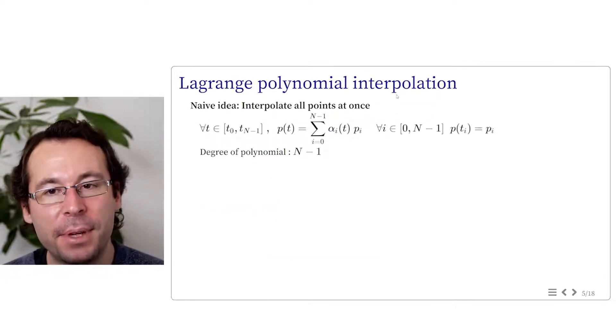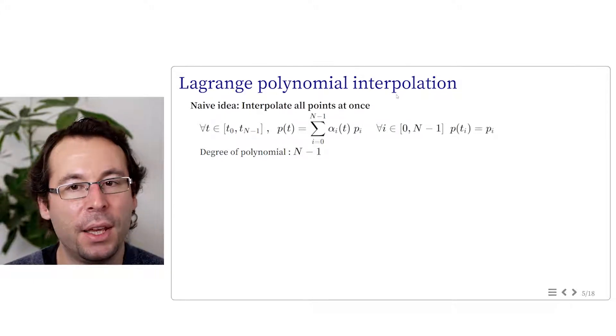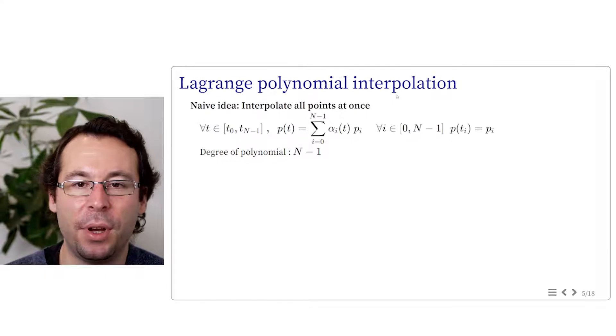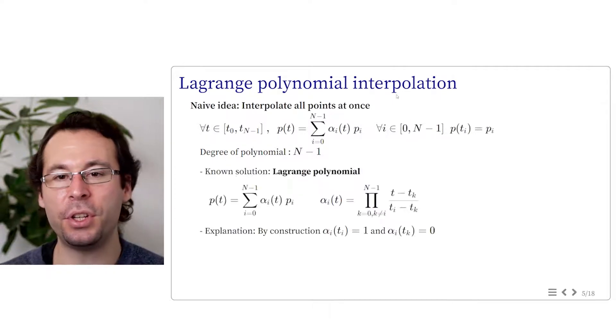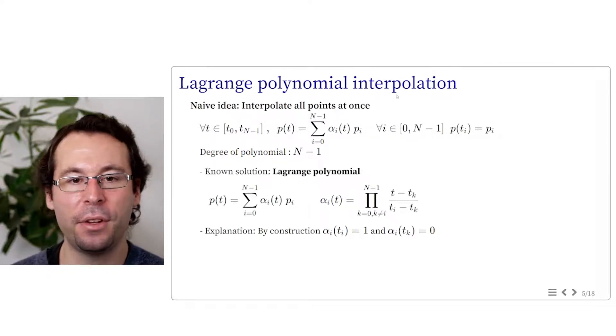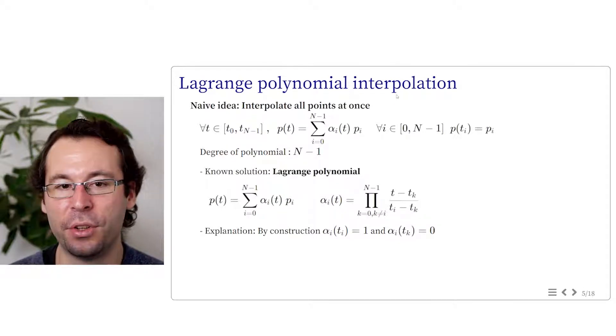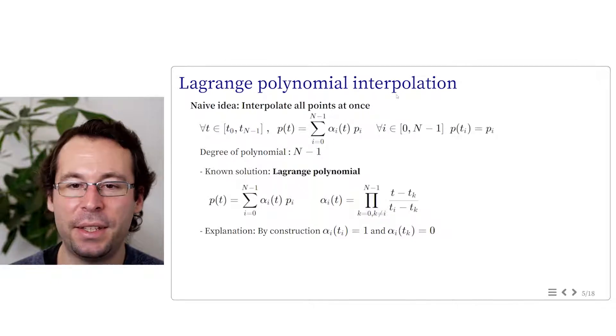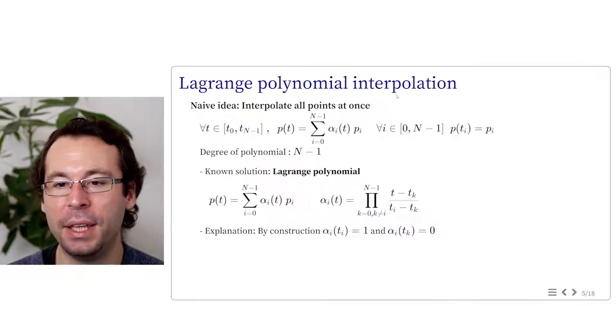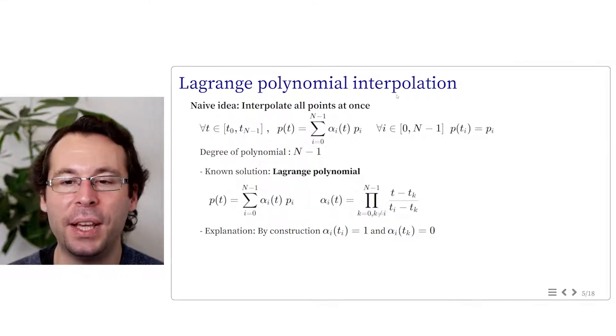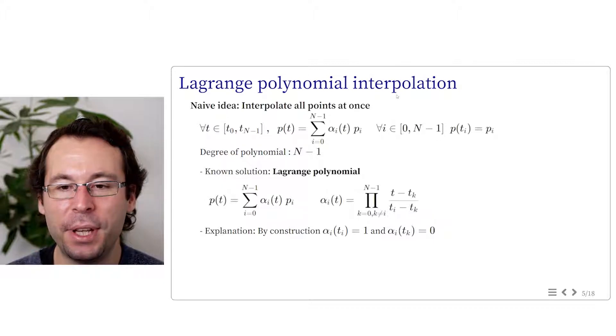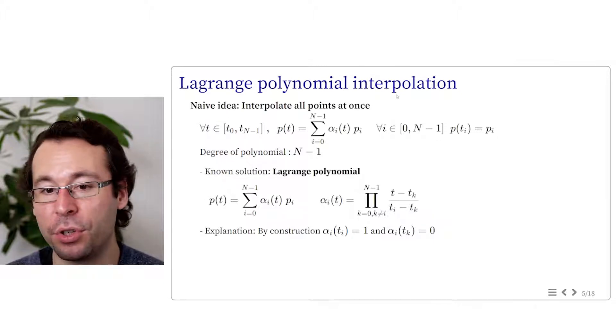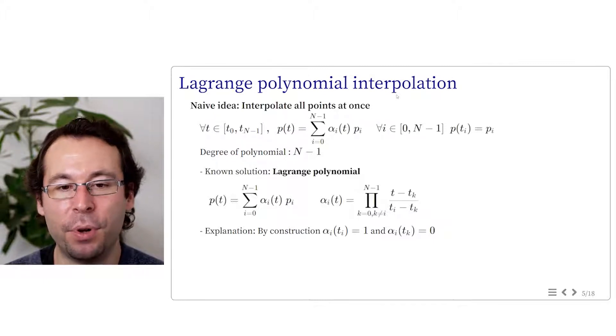There is actually a mathematical answer to this interpolation problem. If we have n positions at a specific time, we know we can interpolate them exactly using a polynomial of degree n-1. The solution is known as the Lagrange polynomials. The basis function alpha i are computed as the products of all t minus tk divided by ti minus tk for k being different of i. This by construction gives alpha i of ti equals 1 and all other alpha i of tk equal to 0, which means that at time ti you get by construction only pi. And as it's a polynomial, it's smooth.